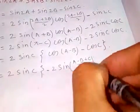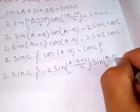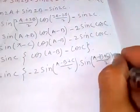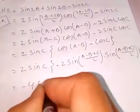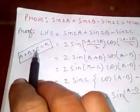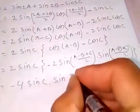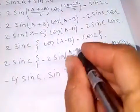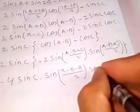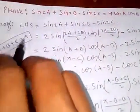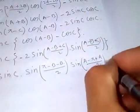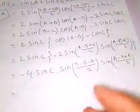This becomes cos((A+B)/2), and with the remaining sine C factor taken out. Now A plus C equals pi minus B, so (pi minus B)/2 appears, and B plus C equals pi minus A, so (pi minus A)/2 appears in the expression as well.